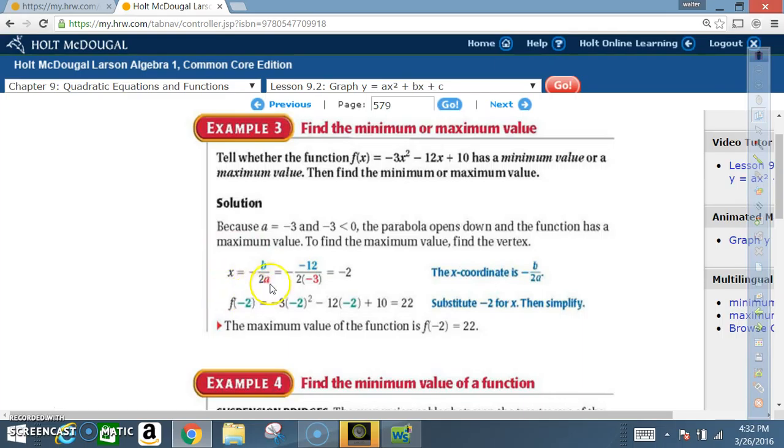Alright, now to find the maximum value, find the vertex. We're going to use our axis of symmetry equation to find the x value of the vertex. We should know that by now: x equals negative b over 2a. The negative is in the formula, so we bring that over. The b value is negative 12, the a value is negative 3. First we do our math right within here. What's 2 times negative 3? That's negative 6. So now I have negative 12 divided by negative 6, which is positive 2. A positive 2 times that negative on the outside, we end up being negative 2.